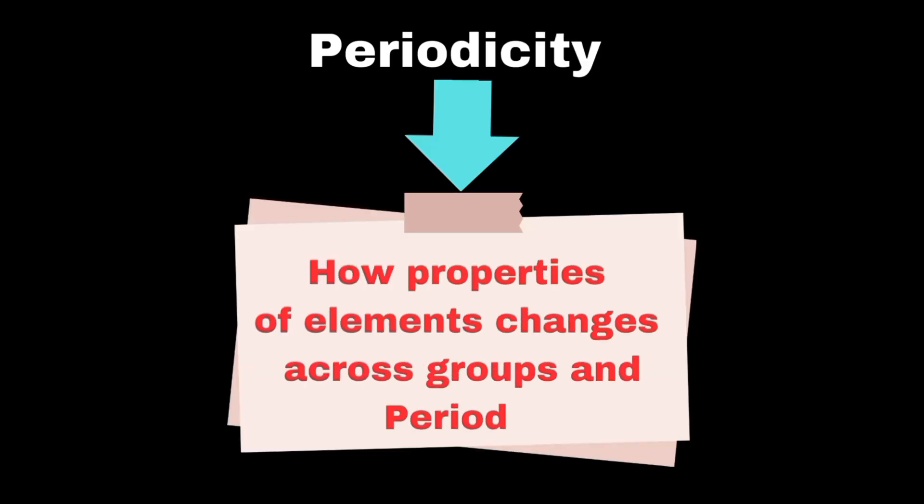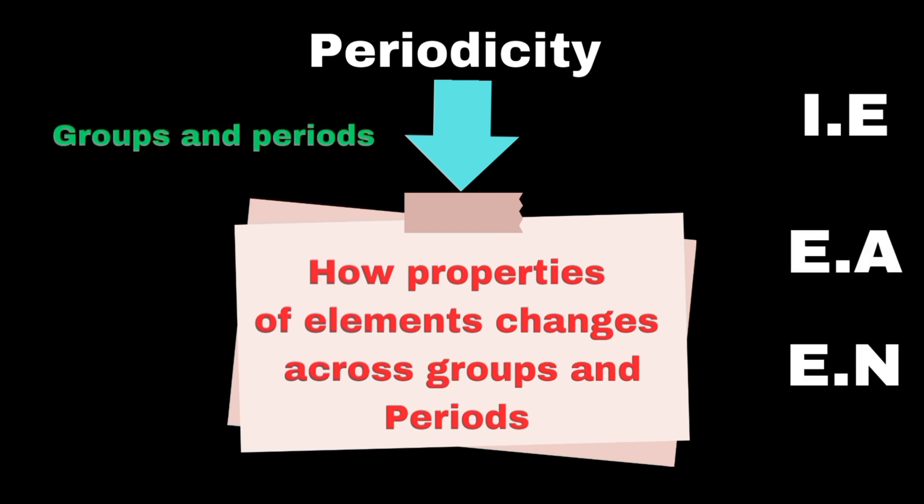Periodicity means how properties of elements change across groups and periods. Let's discuss the trend of ionization energy, electron affinity, and electronegativity in groups and periods.